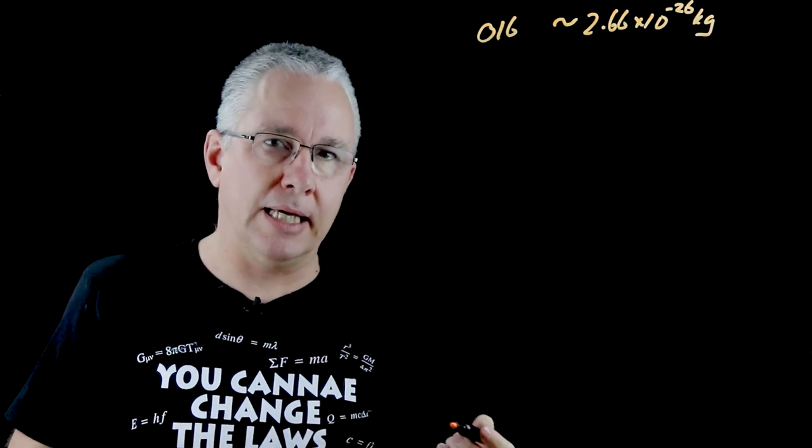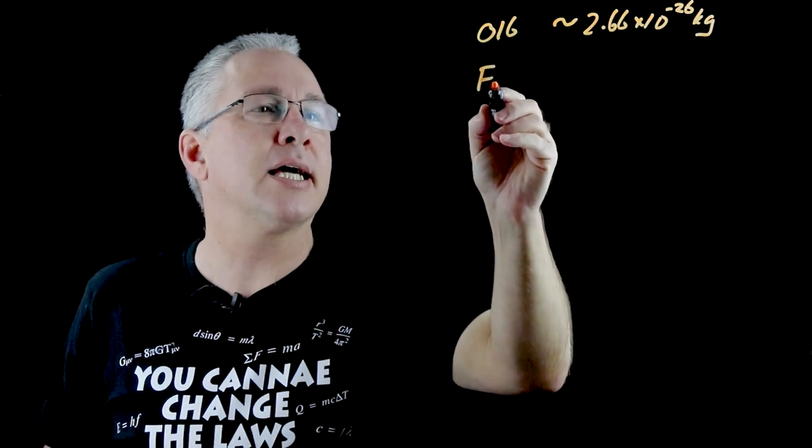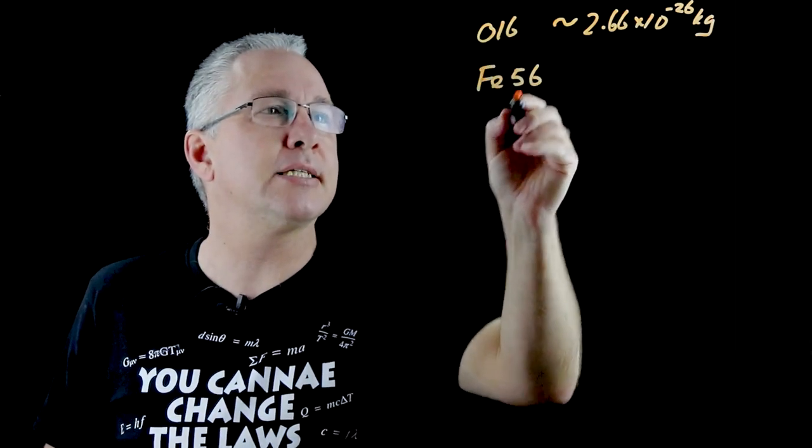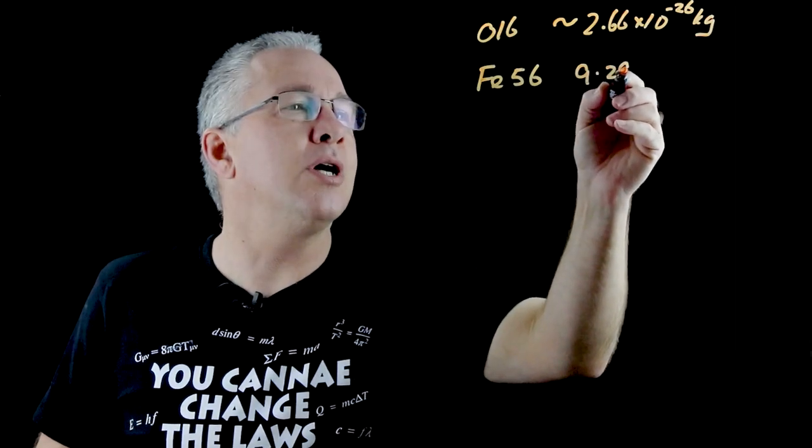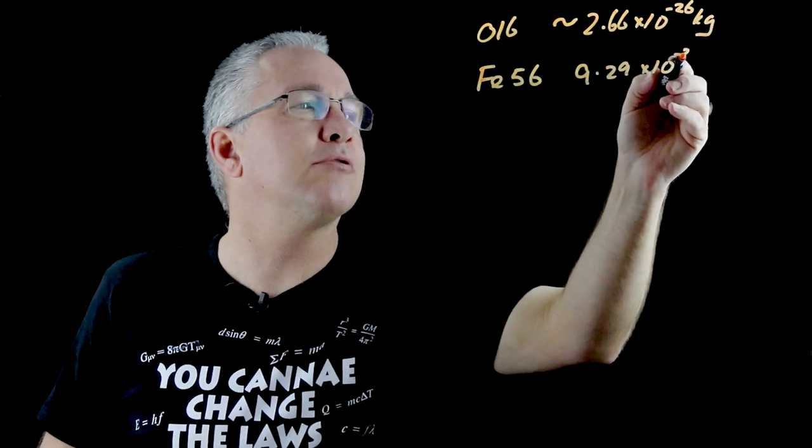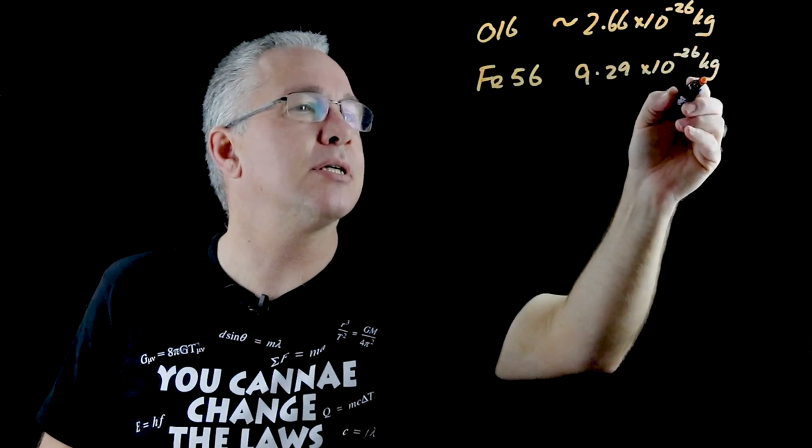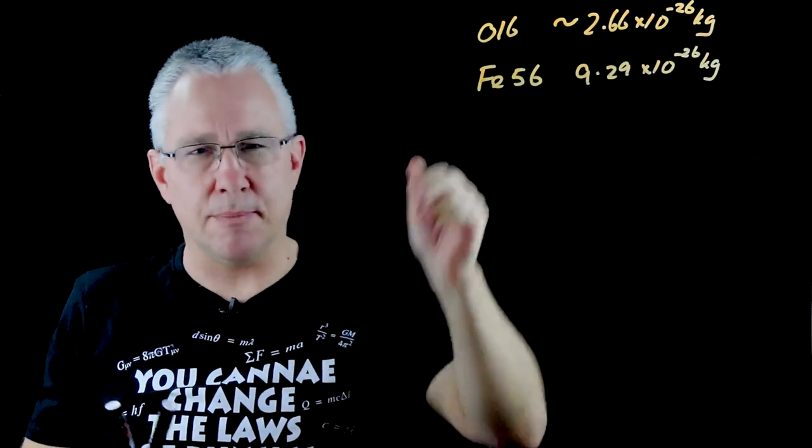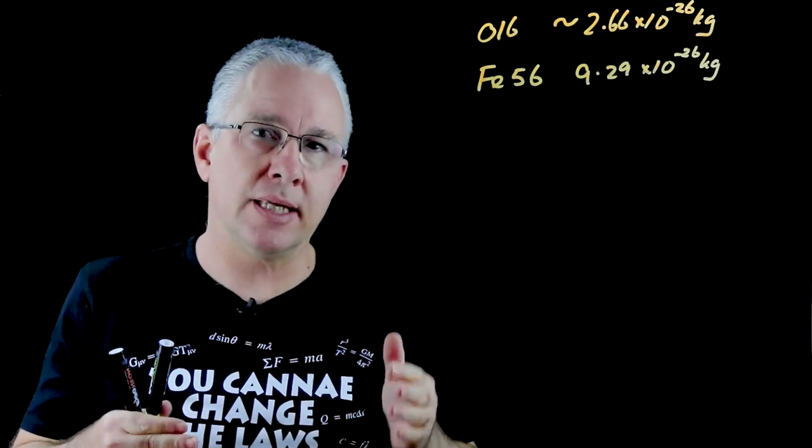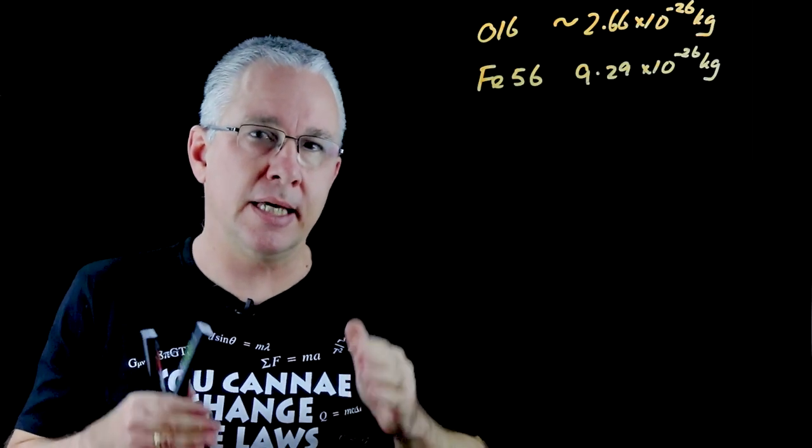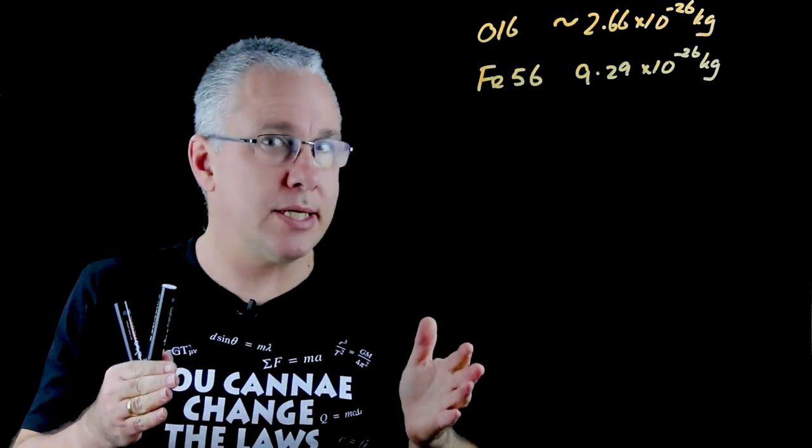If we then look at another common element, it's iron, and in this case I'm going to use iron 56. Now its mass is around 9.29 by 10 to the power of negative 26 kilograms. So as you can see these numbers are really small and messy to deal with.